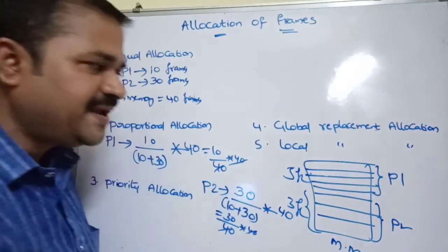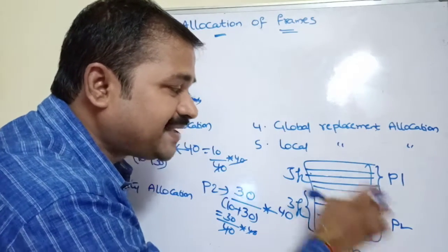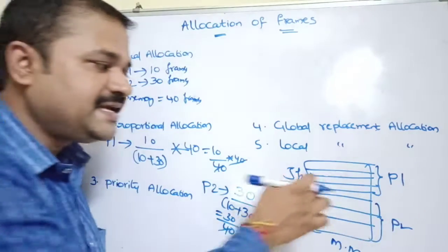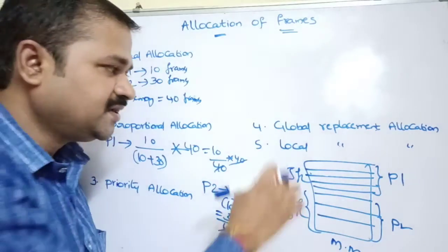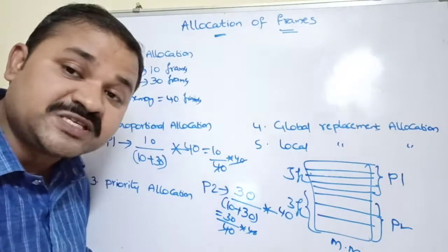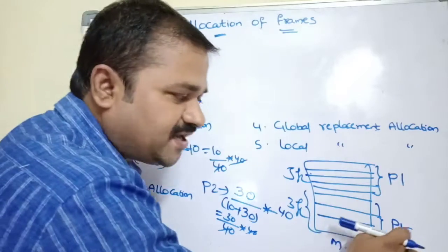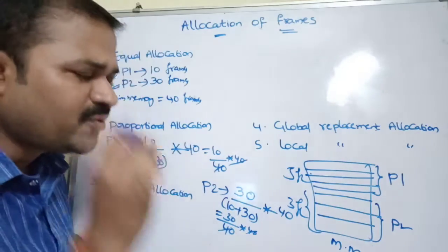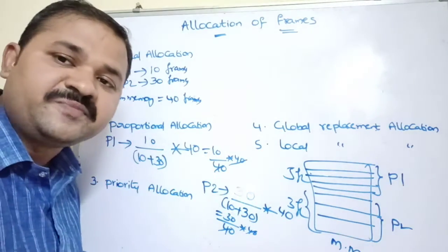That means if we use global replacement allocation, process P1 can take a frame from process P2, and likewise process P2 can take a frame from process P1. So let us assume that the CPU is executing process P1 and a page fault occurs. The operating system loads a page from secondary memory to main memory. With global allocation, we can store a process P1 page in process P2's frames as well. Similarly, when executing process P2, if a page fault occurs, we can store a process P2 page in any of the frames, including process P1's frames.